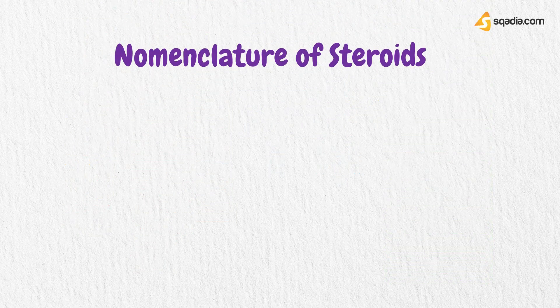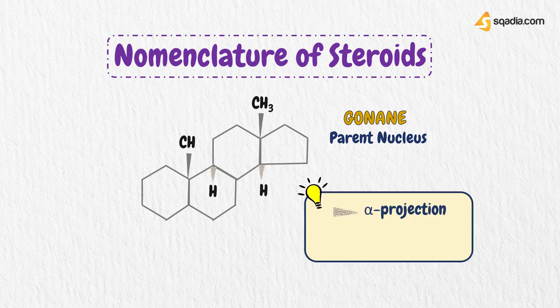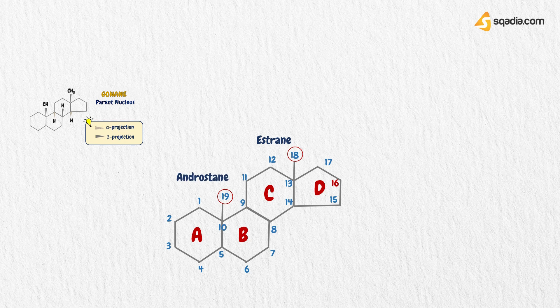Now let's move forward and learn the nomenclature of steroids. When groups such as methyl groups are substituted into the steroid nucleus, they can be oriented below or above the plane of the paper. If below the plane of the paper, they are in the alpha projection; if above the plane, they are in the beta projection. The gonane nucleus is described by the letters A, B, C, and D. The addition of a methyl group at C18 of the gonane nucleus forms estrane. The addition of another methyl group at C19 forms androstane.